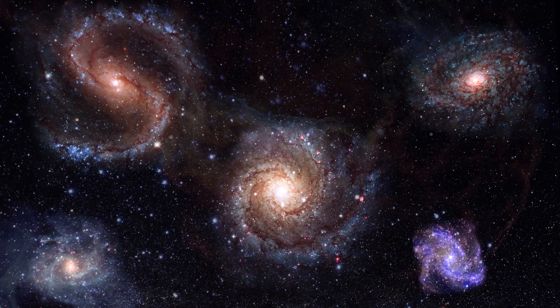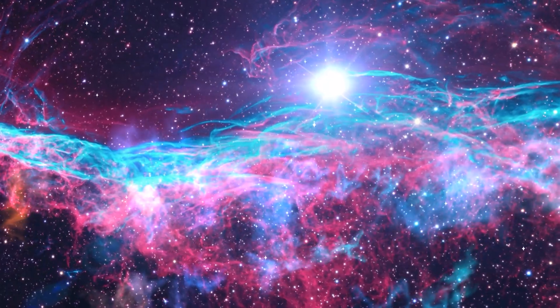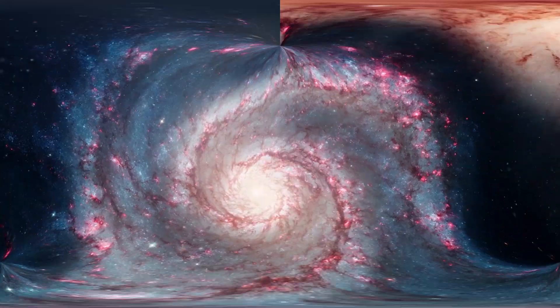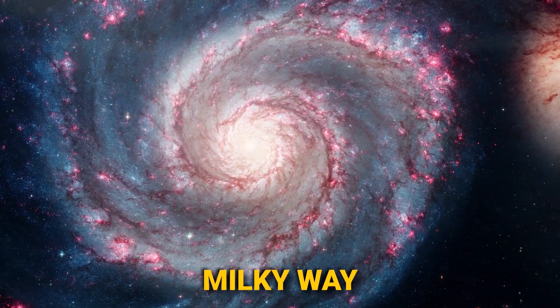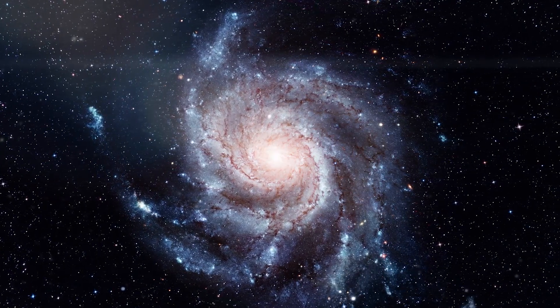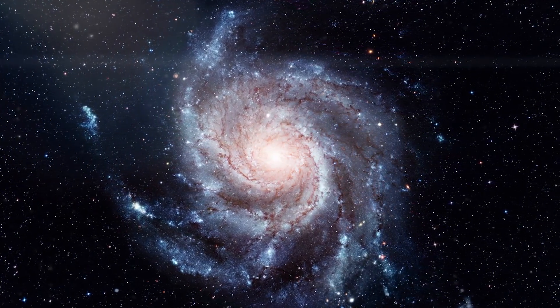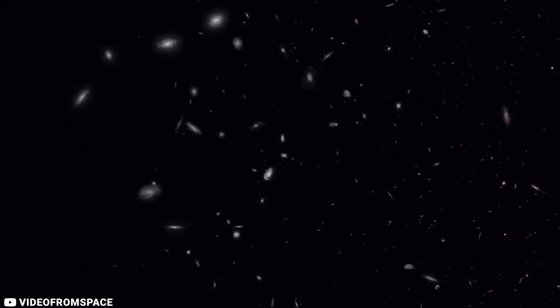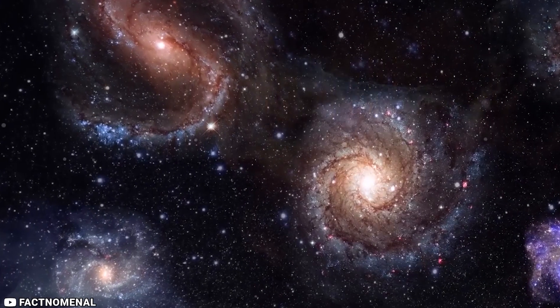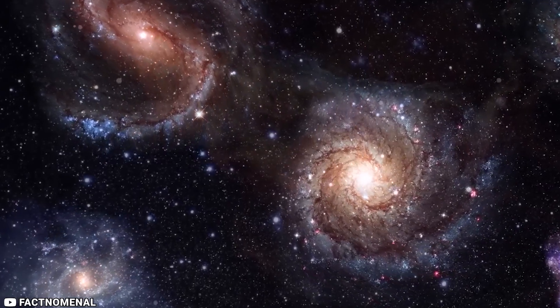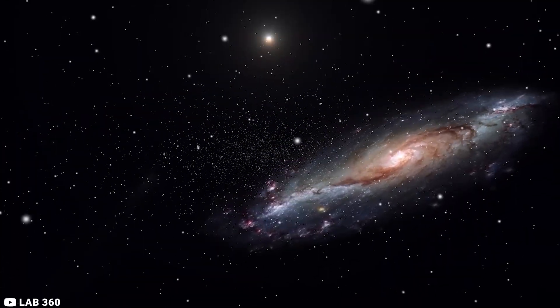Galaxies come in a variety of shapes, including spirals, ellipticals, and irregular galaxies. Spiral galaxies, like the Milky Way, have a spiral-shaped disk of stars and a central bulge of stars. Elliptical galaxies are oval-shaped and do not have a spiral disk. Irregular galaxies are any galaxies that do not fit into the spiral or elliptical categories.